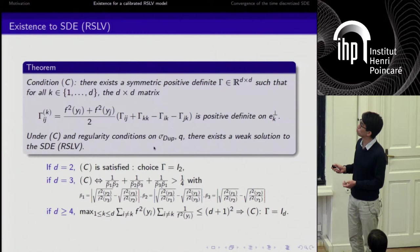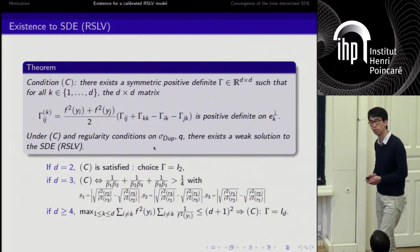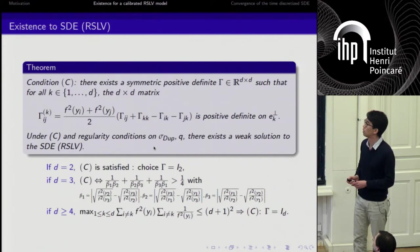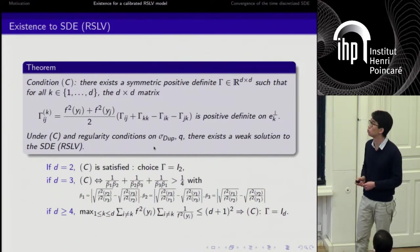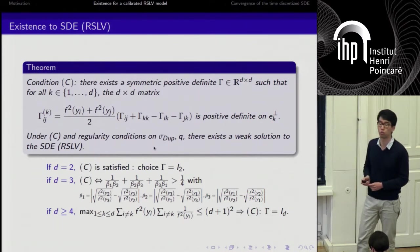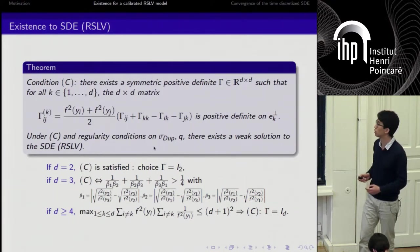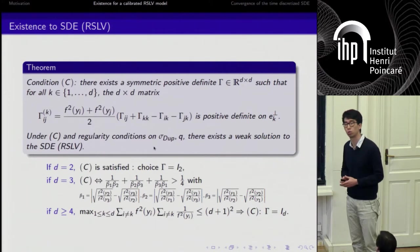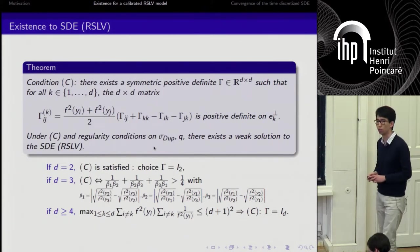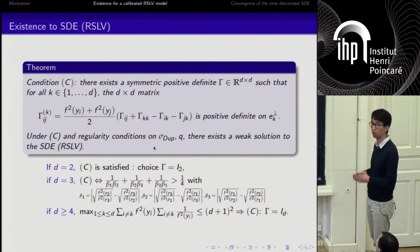Why do we have this kind of condition? In order to prove this result of existence, we first consider the Fokker-Planck system associated to this SDE. Condition C here ensures the coercivity property under this Fokker-Planck system so that we can apply Galerkin's procedure to show existence of a solution to the PDE system in the sense of distributions. After that, once we get the solution to the Fokker-Planck system, we generalize a result by Alessio Figalli, which enables us to get back to the weak solution to the SDE. This is the origin of condition C: it just enables us to compute useful energy estimates on the PDE side.